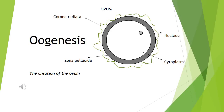Oogenesis is the process by which the female gametes, or ova, are created. In this presentation, each component of follicular development will be discussed, as well as its relation to cell division.